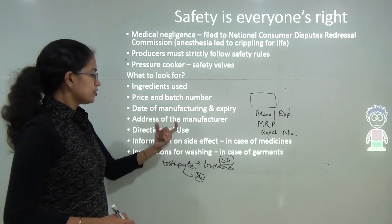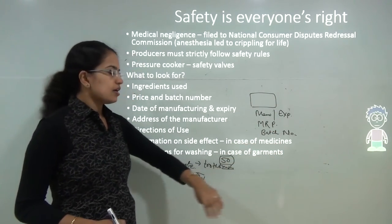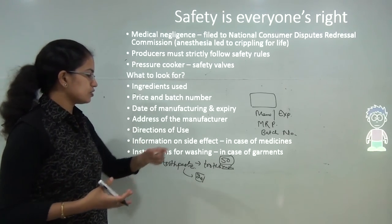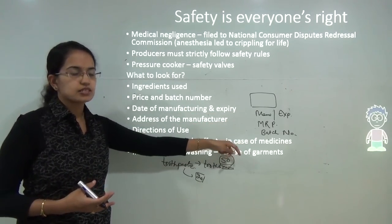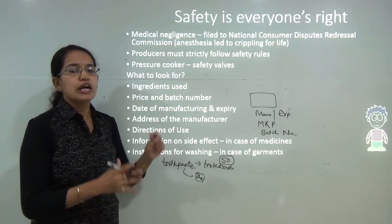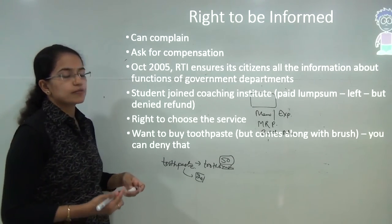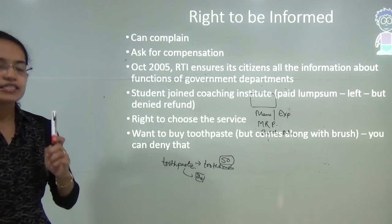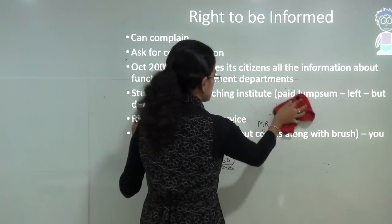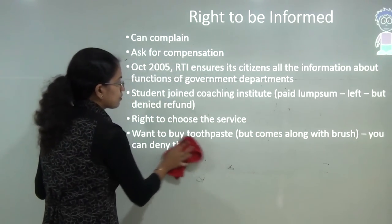Similarly, all relevant information must be provided on products. For garments, there must be washing instructions; for medicines, information on side effects. Customers have the right to look for this information and decide whether to go for a certain commodity. The customer also has the right to be informed, can complain if they suffered losses, and can ask for compensation.